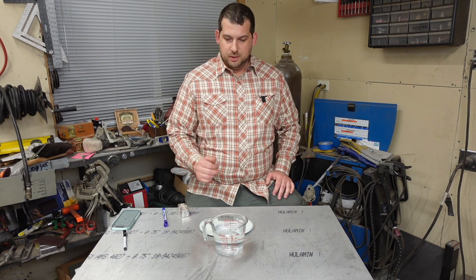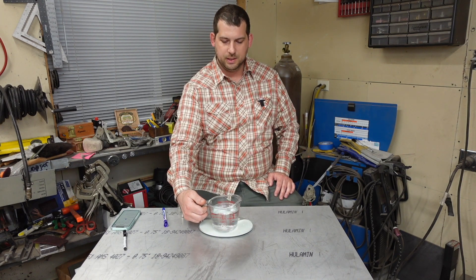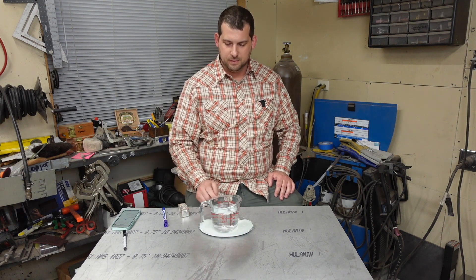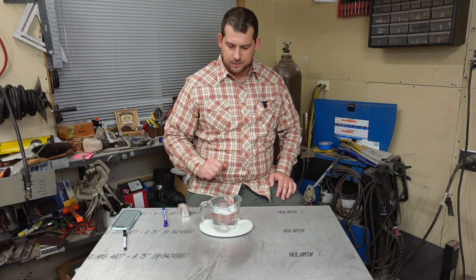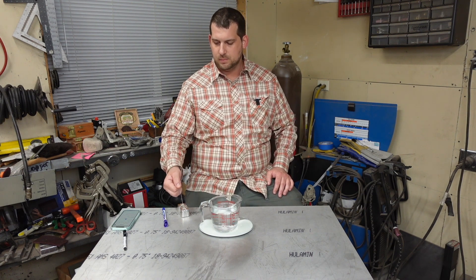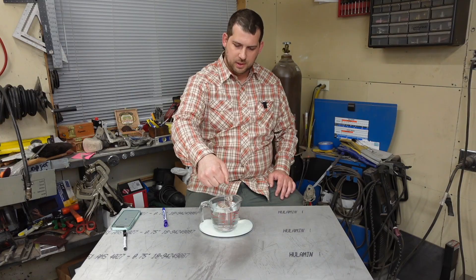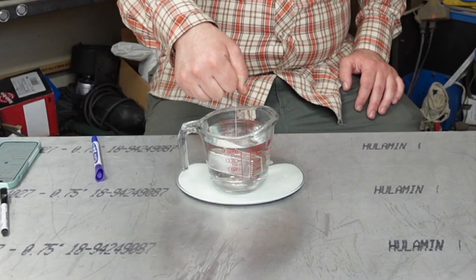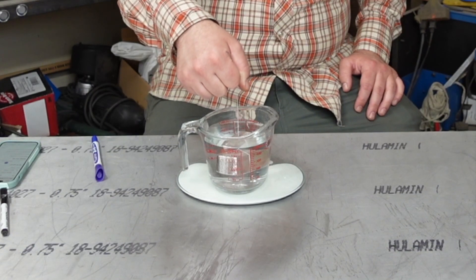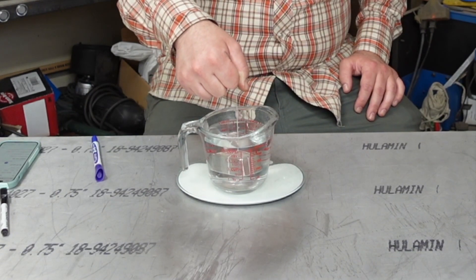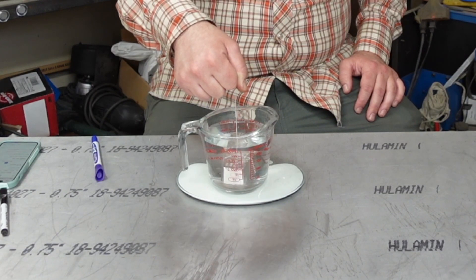So we'll just turn our scale on and we'll put the water on there, doesn't matter how much water you have, and we're going to zero out the scale. And we're going to fully submerge our bar and try and hold it still and not touch the sides.